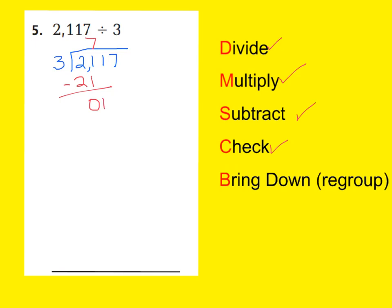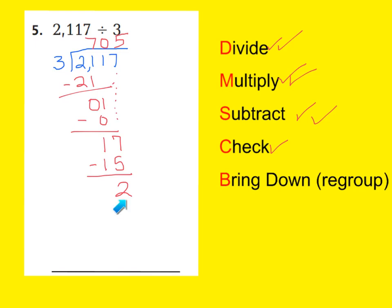Now you need to stop and say: I have one group of tens, but I have 3 groups to divide them into. Therefore I can't do it — I need to put a 0 up in my quotient. Multiply 0 times 3 is 0 and subtract. I have one group of ten still left. But now I can bring down my 7 ones. My one group of 10 — which is 10 ones — plus my 7 ones equals 17 ones. Now divide again: 17 divided by 3 will be 5, because 6 would be too many. Multiply: 5 times 3 is 15. Subtract: I have 2 ones left over. Check: 2 is less than 3. Because there's nothing else left to bring down, I am finished. The quotient is 705 with a remainder of 2.